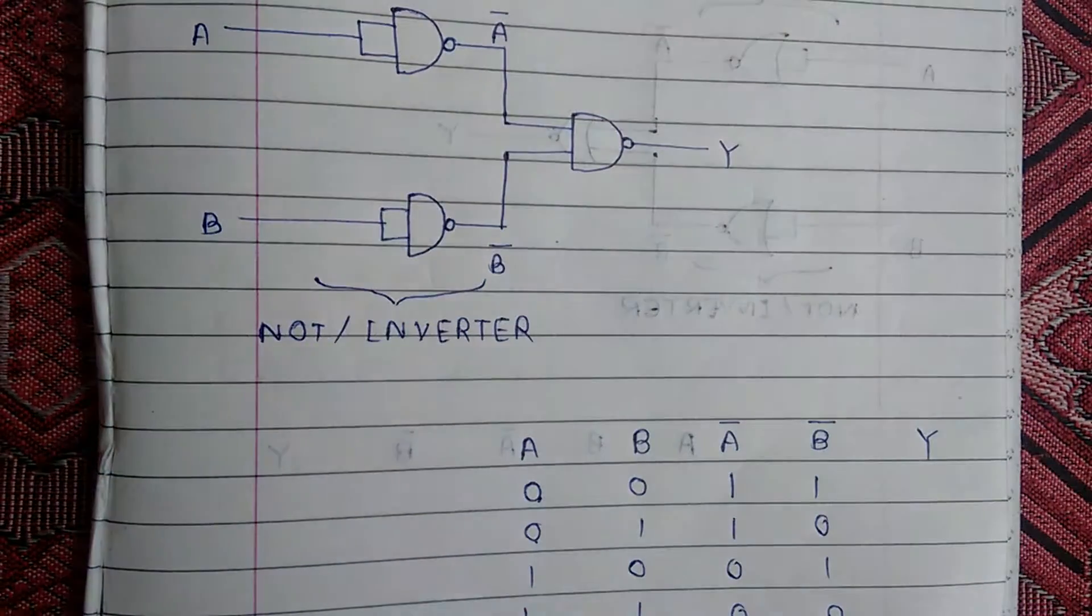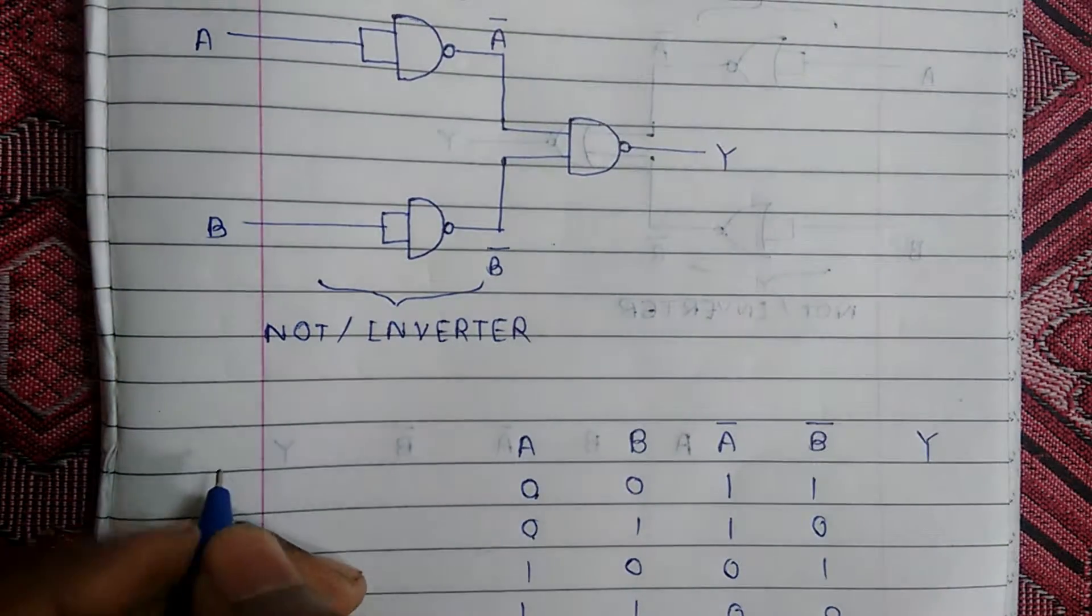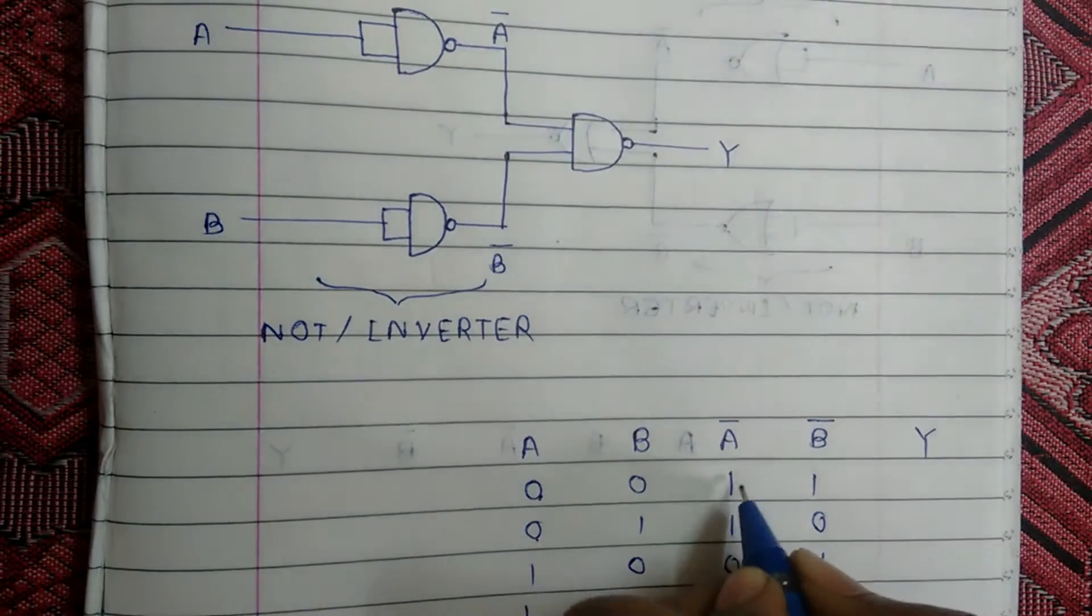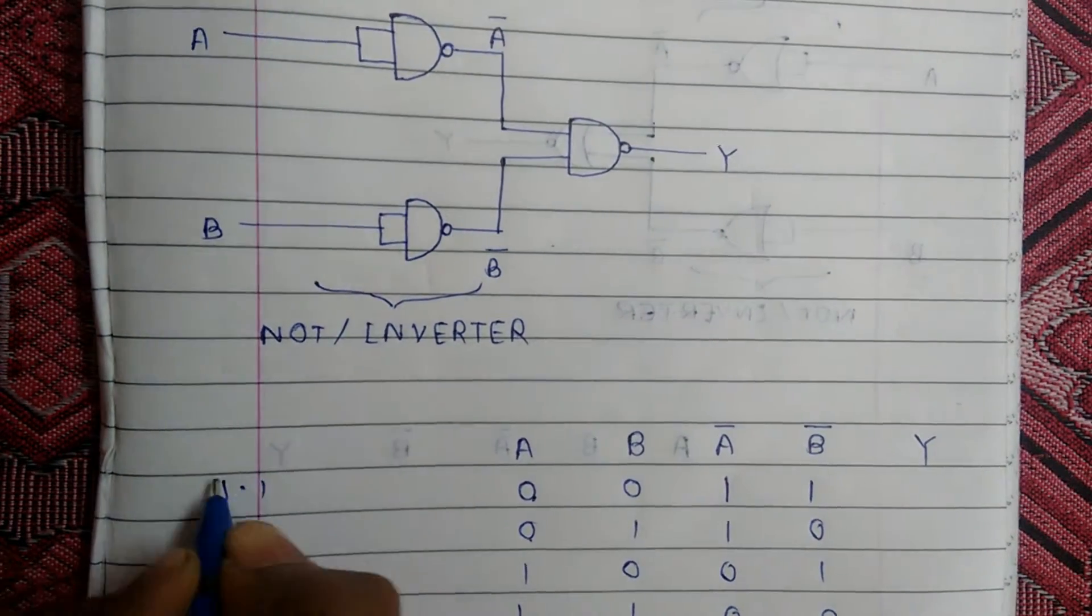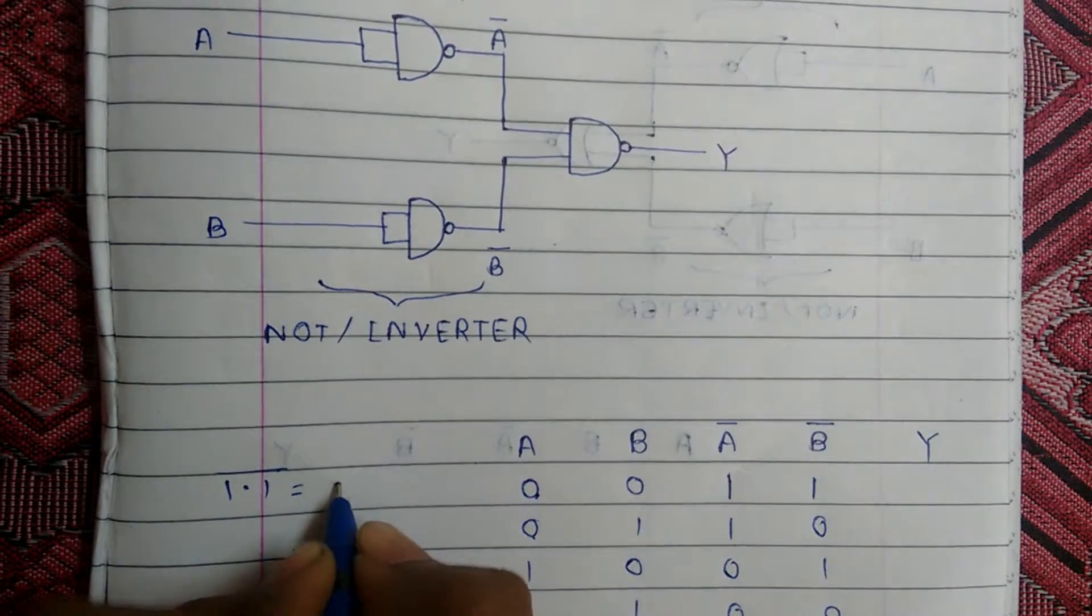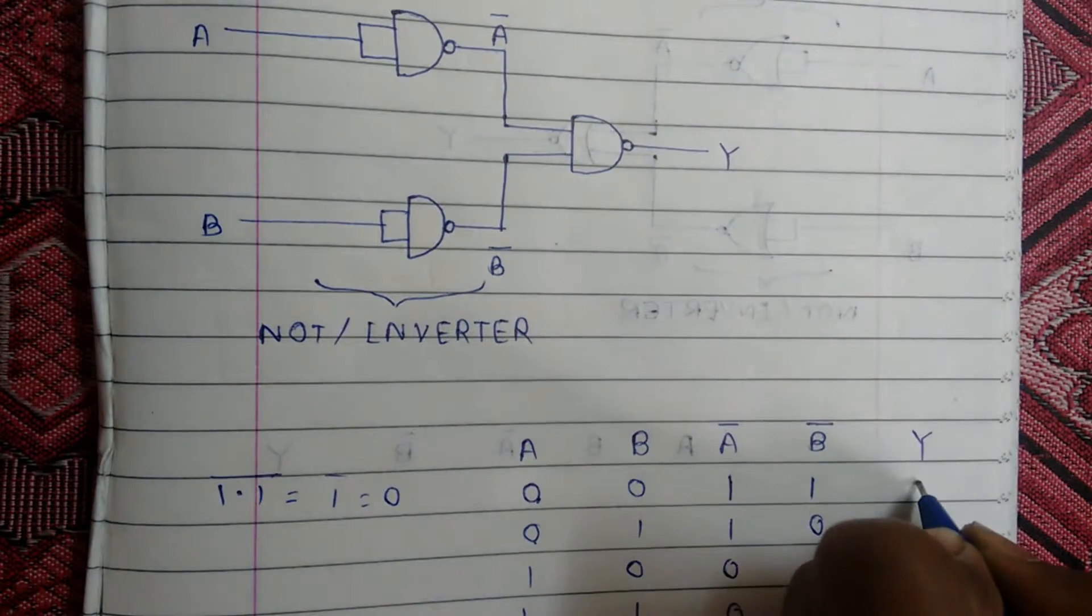This is a NAND gate. If you know a NAND gate, then if 1 and 1 are inputs, then 1 times 1 and its complement equal to 0's complement, so our output is 0.